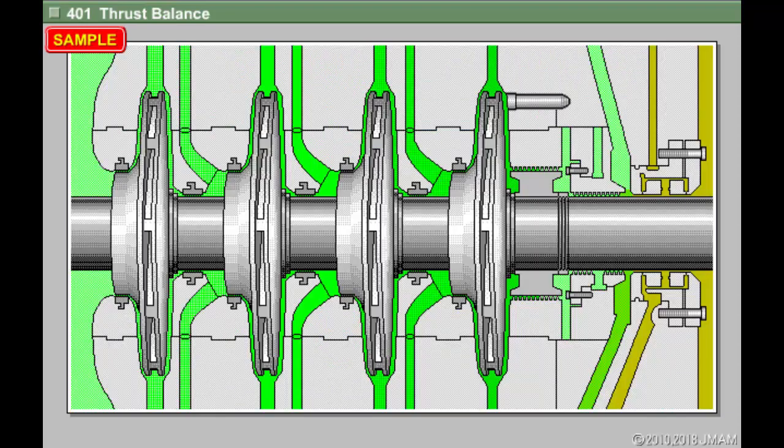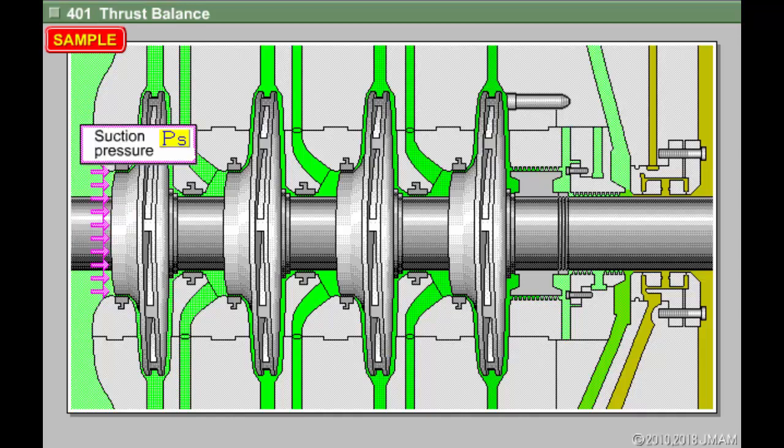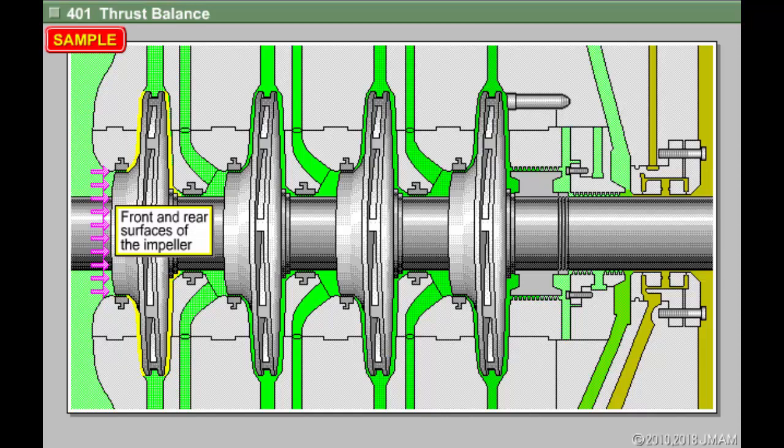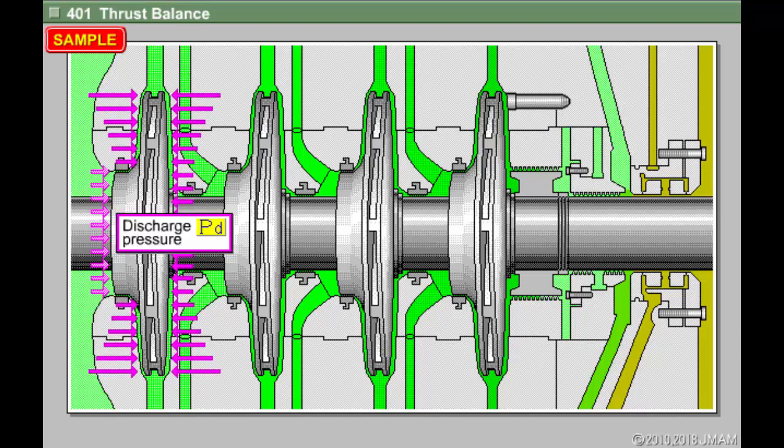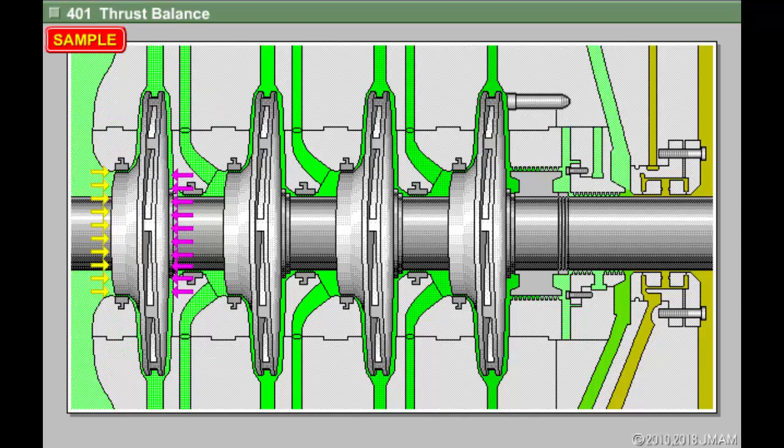Suction pressure is applied to the suction of the centrifugal compressor's impeller. Moreover, discharge pressure is applied to this section at the front and rear surfaces of the impeller. Therefore, thrust power acts on the suction side due to differences in pressure on this section.